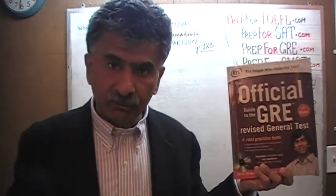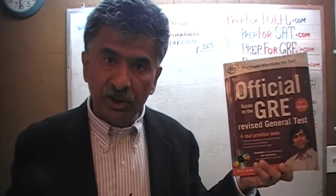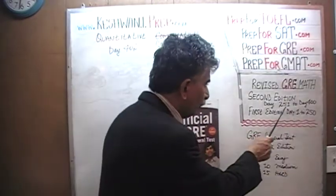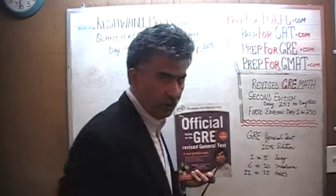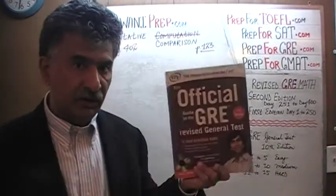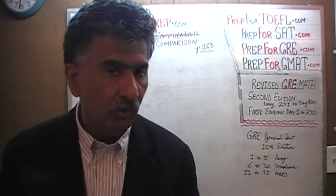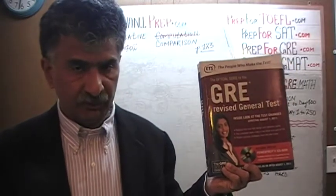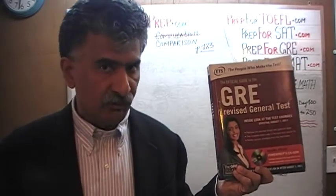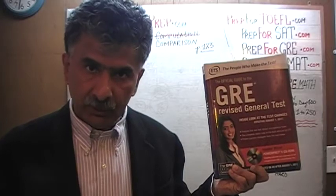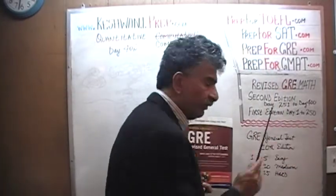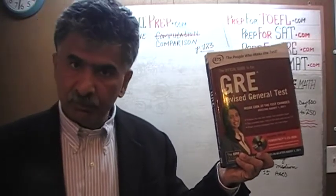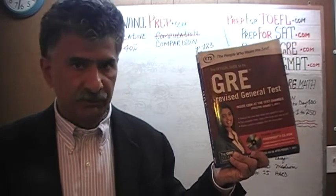If you're interested in watching the solutions to any of the math problems in this book, we have already done all of them. You will find those solutions from day number 251 to day 400. These problems in the second edition of the revised GRE are almost all the same problems as the ones in the first edition, with a few exceptions. The original solutions are from day number 1 to day 250, and most of the problems — and the page numbers — are the same.